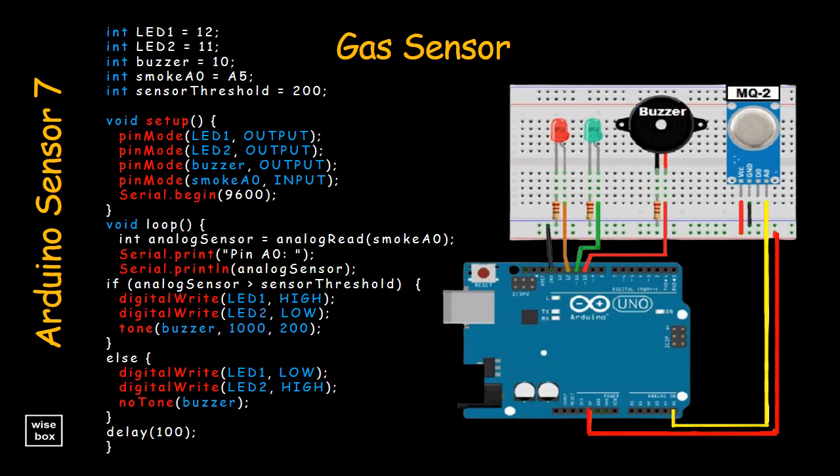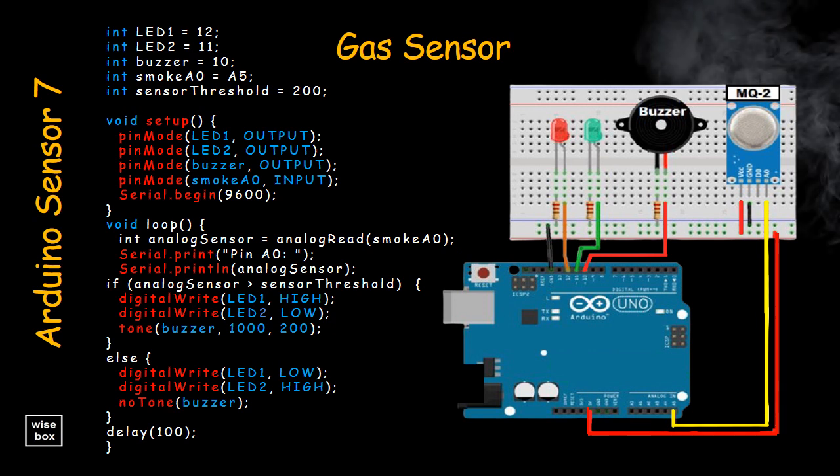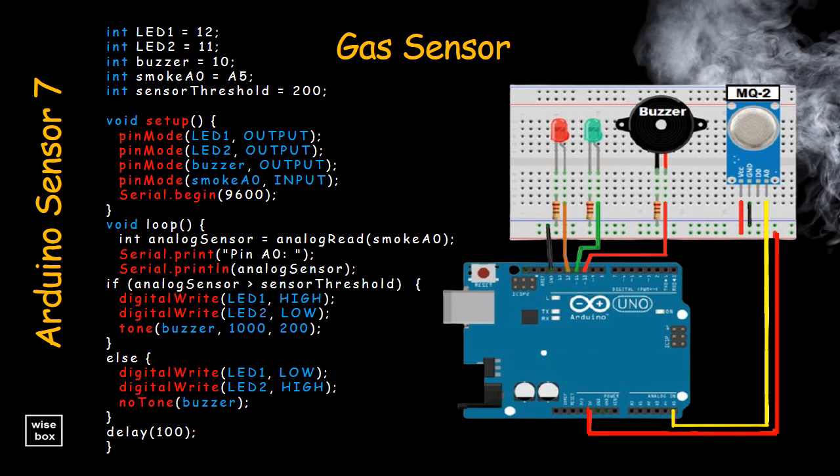After making the connections and uploading the code to Arduino, it's ready to activate whenever it detects smoke or gas. You can observe that whenever the amount of smoke or gas goes beyond the threshold, the red LED lights up and the buzzer sounds. Otherwise the green LED lights up, which means no gas or smoke was detected.